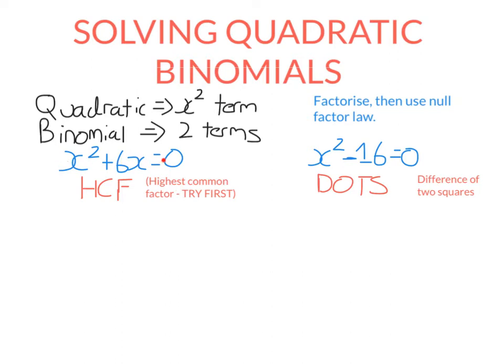Let's look at this example here. What we're going to do is factorise this quadratic expression and then use the null factor law, just like we went through last lesson. The reason we use the highest common factor method here is because the terms x squared and 6x have a common factor. The common factor is x.